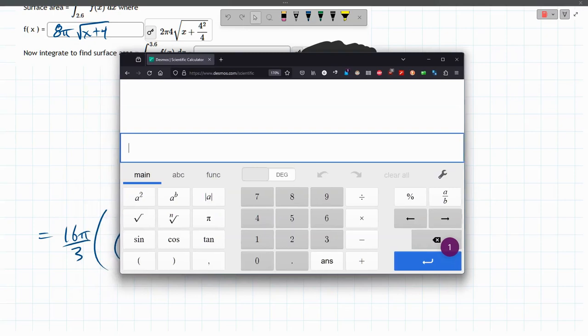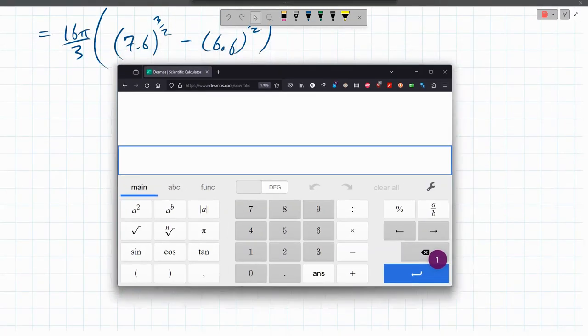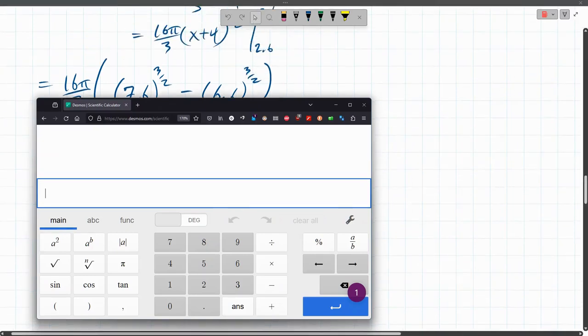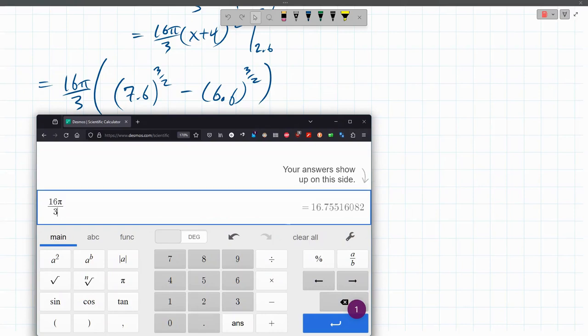All right. This will let me type everything in at one time. And if I scroll a little bit, I can get everything on the screen that I need. All right. 16π over 3. Double parentheses. 7.6. Probably didn't need that parentheses. Raised to. I'll still use the 1.5 power here.